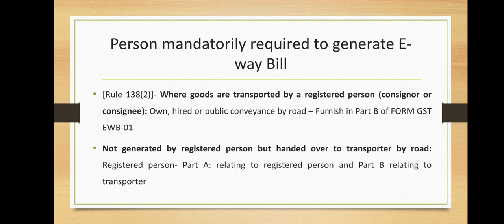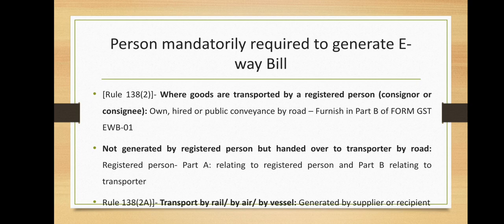Transportation by Rail, by Air or Vessel: the e-way bill is to be generated by the supplier or recipient. Where the goods are transported by rails or by air or by vessel, the e-way bill shall be generated by the registered person being the supplier or the recipient, who shall either before or after the commencement of the movement furnish on the common portal the information in Part B of Form GST EWB-01, as per Rule 138 clause 2A.